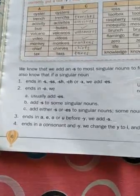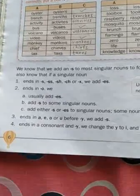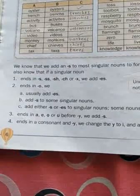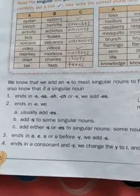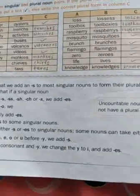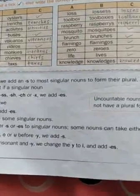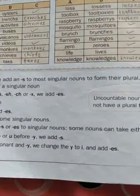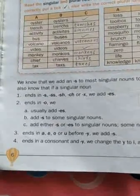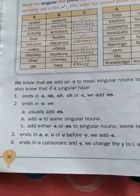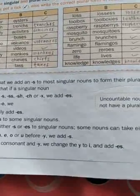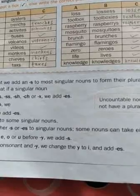Rule number four: nouns which end in a consonant and -y — we change the -y to -i and then add -es.